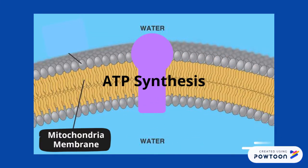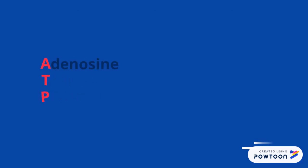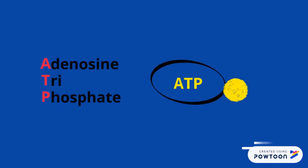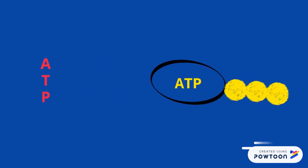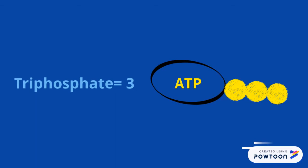ATP, or adenosine triphosphate, is composed of three phosphates.